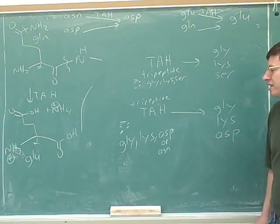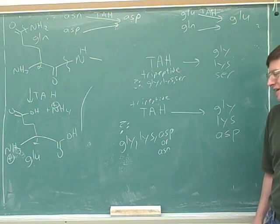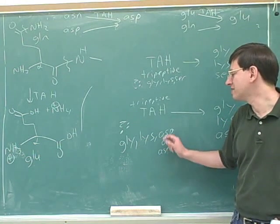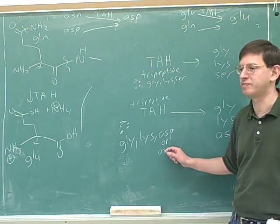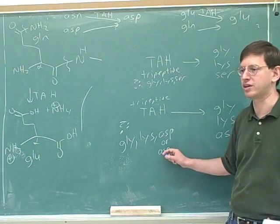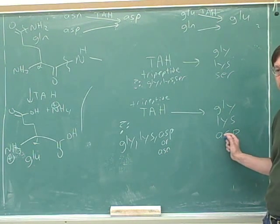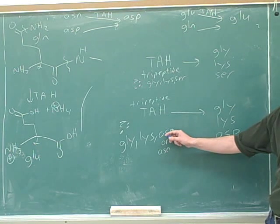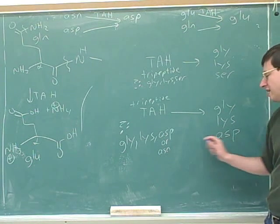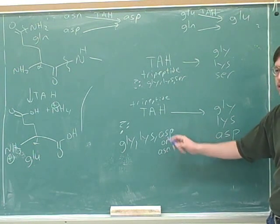These problems are detective stories where you keep writing down what you know. It's very important every time you figure something out to write down what you know about the original peptide. So we know it was composed of glycine, lysine, and either aspartic acid or asparagine. Don't write nothing about the unknown component — write down that it's either aspartic acid or asparagine. Most people get this wrong and automatically assume that if hydrolysis gives aspartic acid you must have started with aspartic acid, but you could have started with asparagine and still gotten aspartic acid from the hydrolysis.